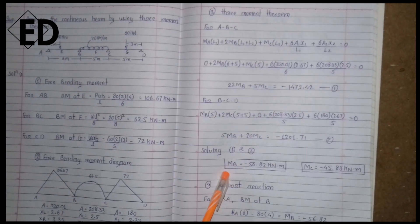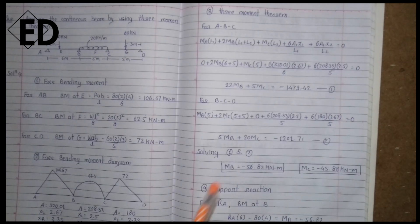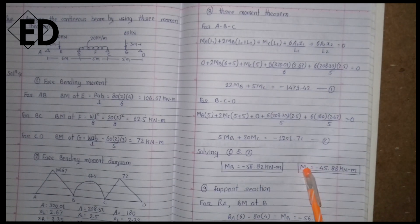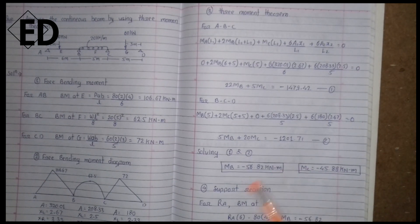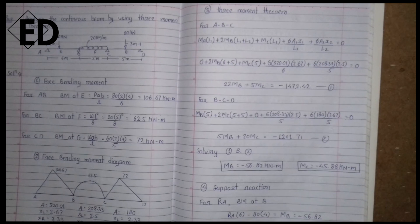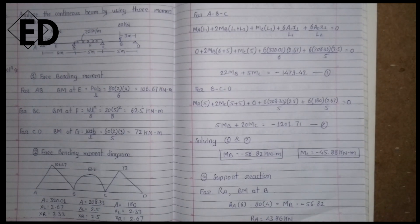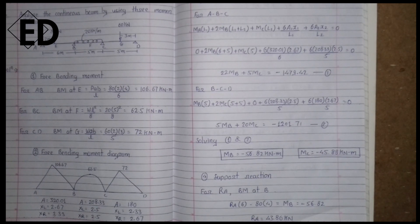By solving equation one and equation two simultaneously, we get the bending moment at B equals −56.82 kN·m and the bending moment at C equals −45.88 kN·m. After that, the fourth step is the calculation of support reactions at each support.